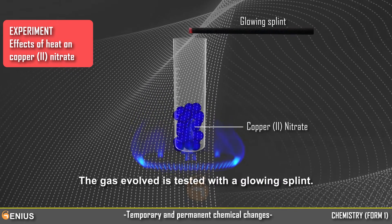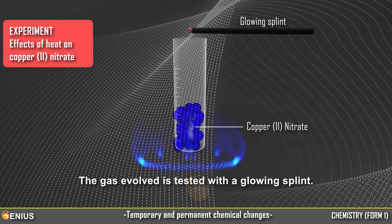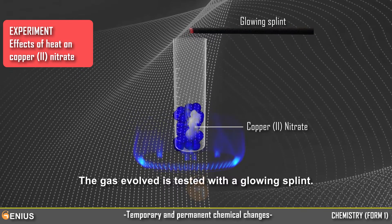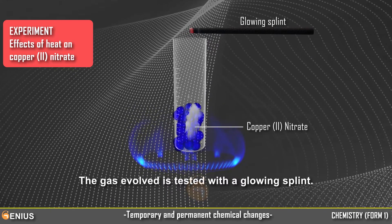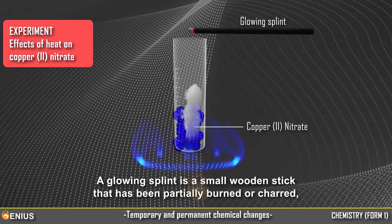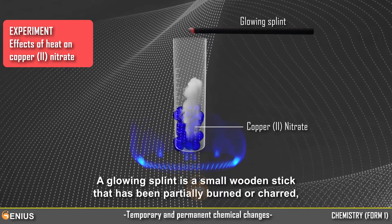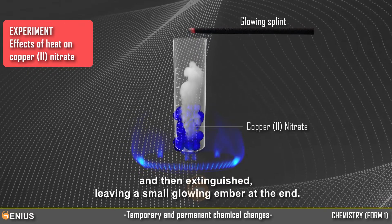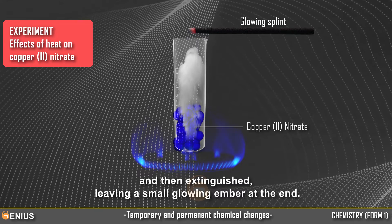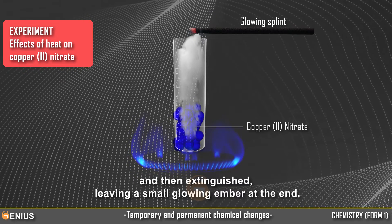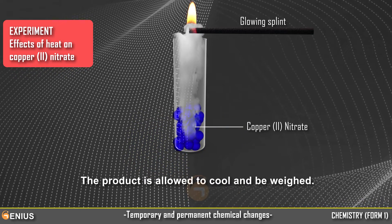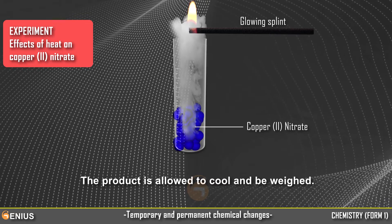The gas evolved is tested with a glowing splint — a small wooden stick that has been partially burned or charred and then extinguished, leaving a small glowing ember at the end. The product is allowed to cool and be weighed.